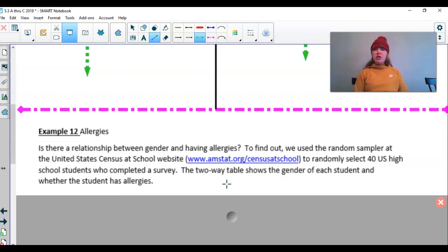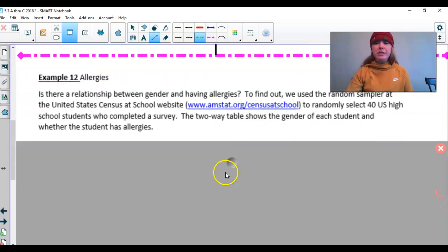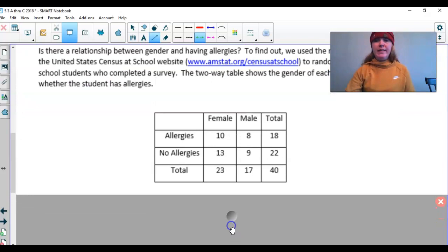Is there a relationship between gender and having allergies? To find out, we used the random sampler at the United States Census at School website to randomly select 40 U.S. high school students who completed a survey. The two-way table shows the gender of each student and whether the student has allergies. And here's that two-way table. And you can see that we do have the totals. It's always important to make sure you have those because you will need them.